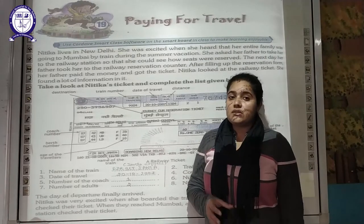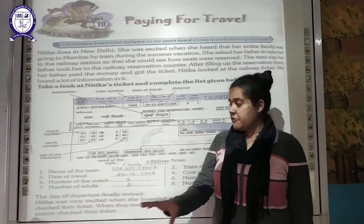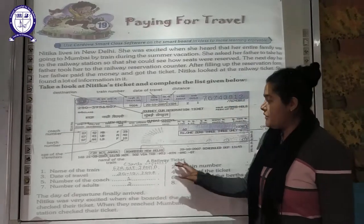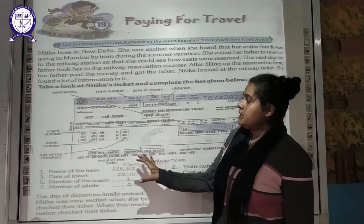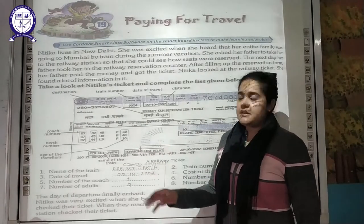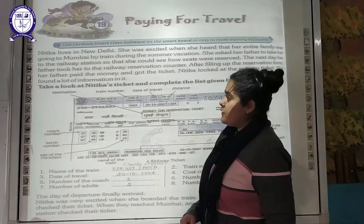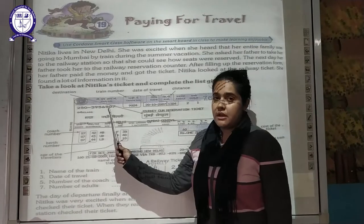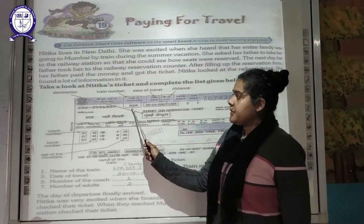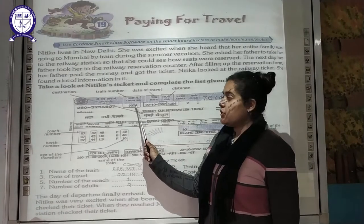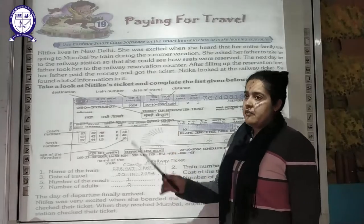When Nitika saw the ticket, there was a lot of information given on it. An image of a railway ticket is shown here with various details. First of all, you can see there is a PNR number. Then the train number is mentioned — 9024.